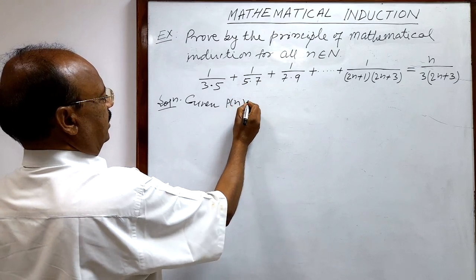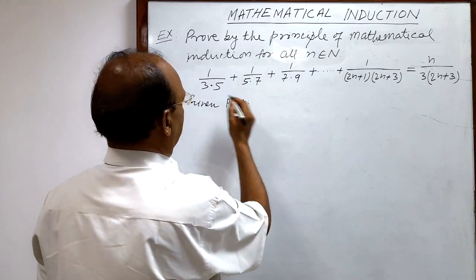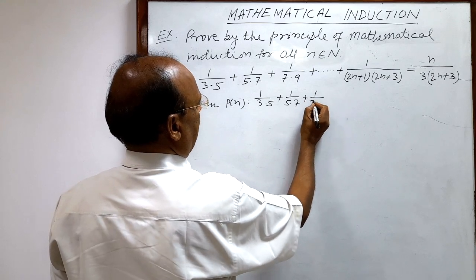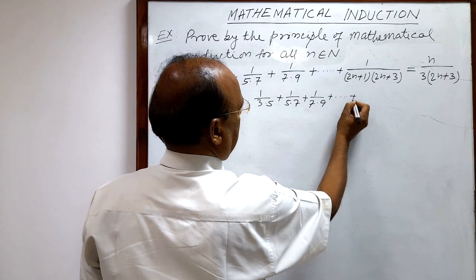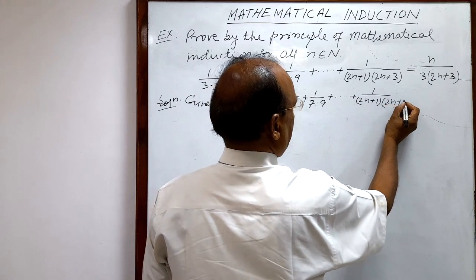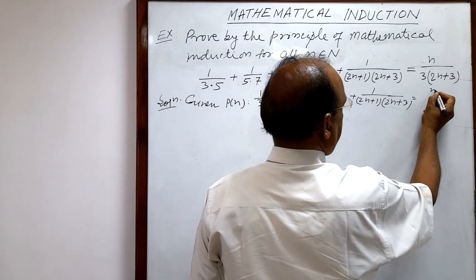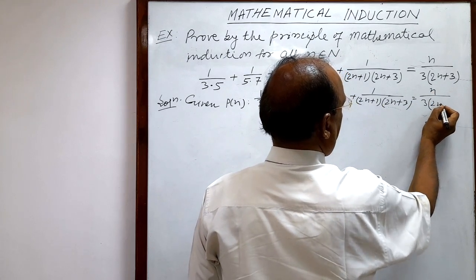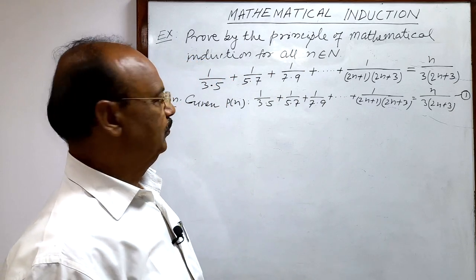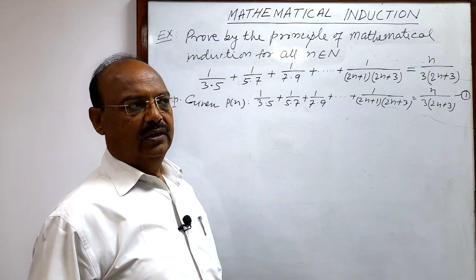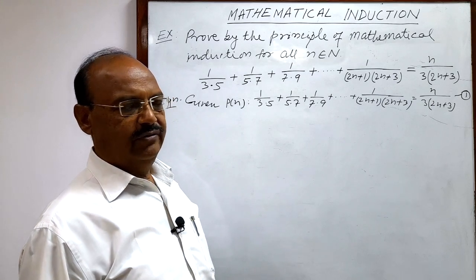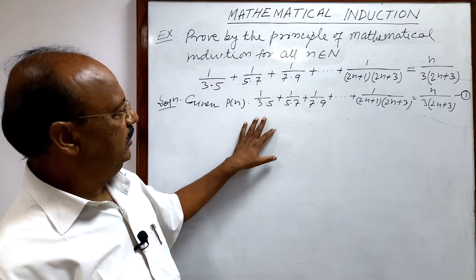We denote the mathematical statement with the notation P(n). So P(n) is 1/(3×5) + 1/(5×7) + 1/(7×9) + ... + 1/((2n+1)(2n+3)) equals n/(3(2n+3)). Let us call it relation number 1. We have done many equations of the same pattern in previous videos.